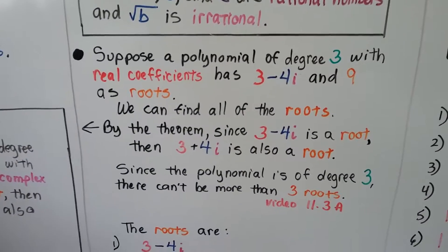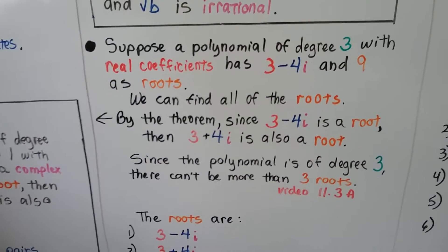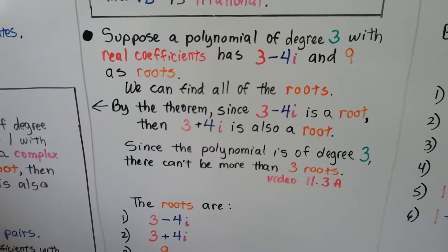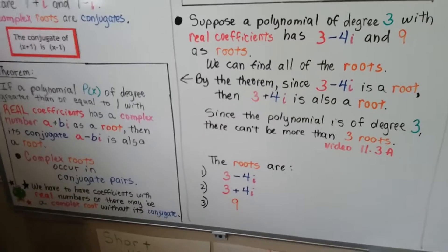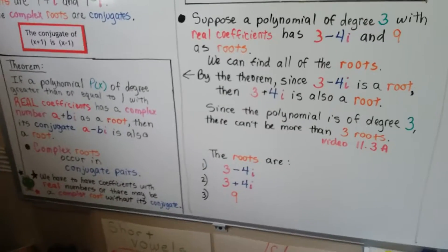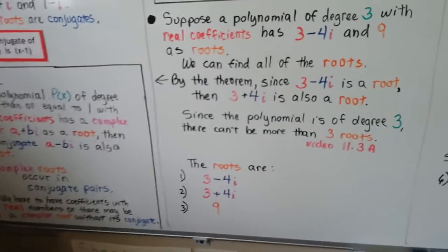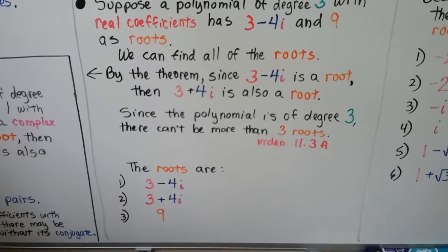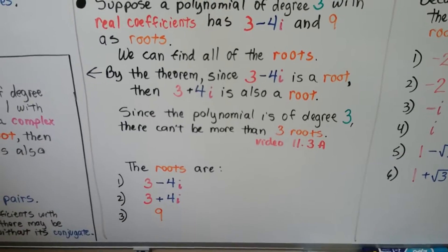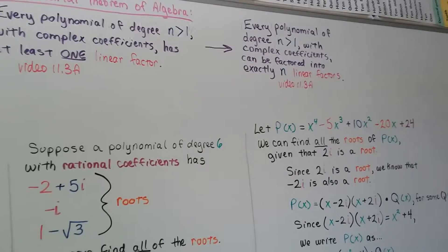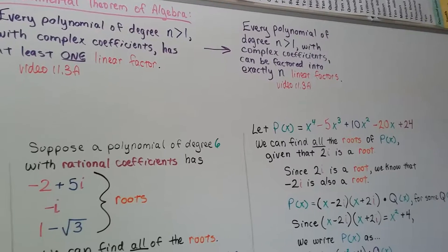Suppose a polynomial of degree 3 with real coefficients has 3 minus 4i and 9 as roots. We can find all the roots. By this theorem, since 3 minus 4i is a root, then 3 plus 4i is also a root. Remember, conjugate pairs. And since the polynomial is of degree 3, there can't be more than 3 roots. That's that theorem right there. Every polynomial of degree n can be factored into exactly n linear factors.